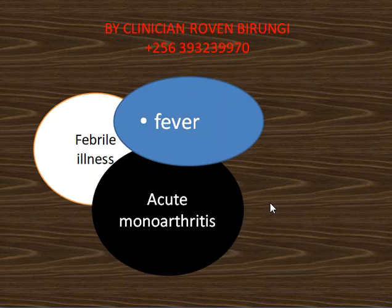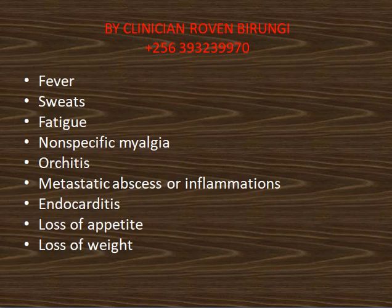Monoarthritis is where one of the joints has become inflamed and swollen, while the opposite joint is normal. The other joints are not affected — only one joint is involved at a time.